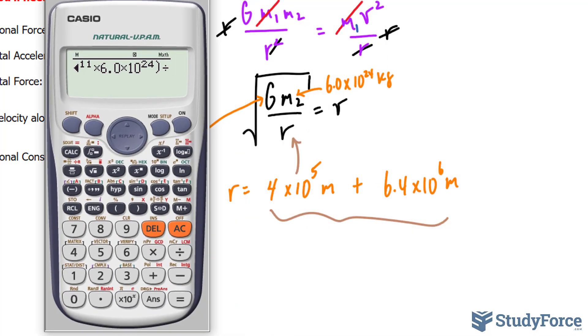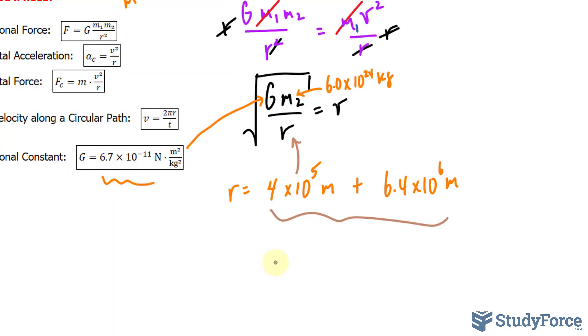So the sum is 4 × 10⁵ plus 6.4 × 10⁶. That means the velocity of the satellite is 7,688. I'll simply round this to three significant figures as 7,690 meters per second. Those are the units for velocity.